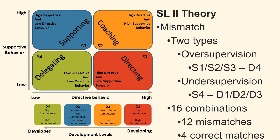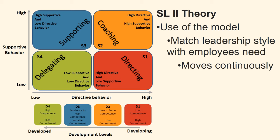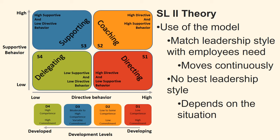In the model, there are a total of 16 combinations between leadership styles and development levels. Of these, 4 are a correct match and the other 12 are mismatches. As a leader, you can use the model to match your leadership style with each of your employees' needs for leadership. You must be aware that an employee continuously moves in the model depending on which task or goal you set for the employee. There is no best leadership style — it depends on the situation.